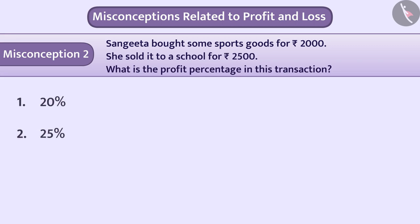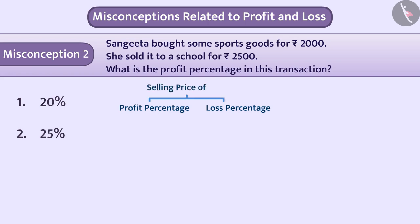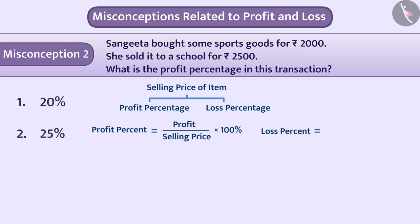Some children think that profit or loss percentage is obtained on the selling price of the item. So they use the wrong formula: profit percentage = (profit ÷ selling price) × 100, or loss percent = (loss ÷ selling price) × 100.